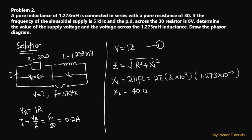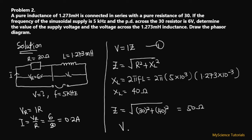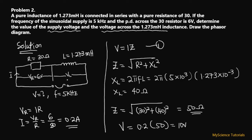Now that XL = 40 ohms, we calculate impedance: Z = √(30² + 40²) = √(900 + 1600) = √2500 = 50 ohms. Substituting back: V = I × Z = 0.2 × 50 = 10 volts as our supply voltage.